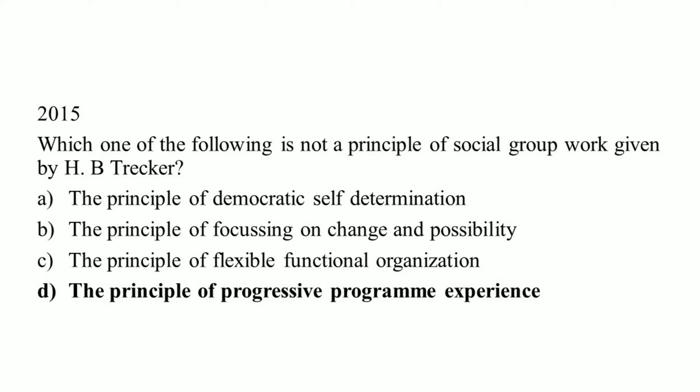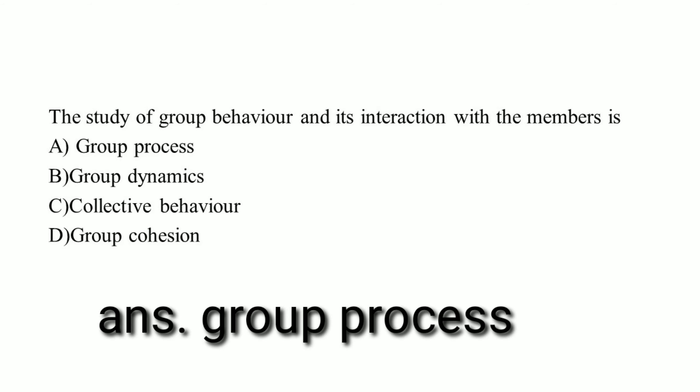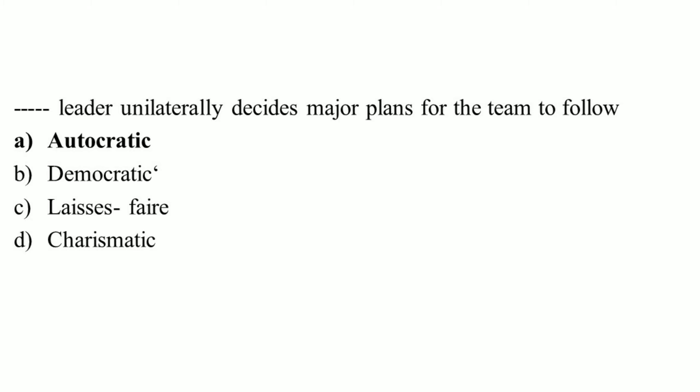From the 2015 UGC NET examination: which one of the following is not a principle of social group work given by H.B. Trecker? Right answer: option D, the principle of progressive program experience. Which one of the following stages of group development represents established roles, standards, and directions? Right answer: option B, storming. The study of group behavior and its interaction with the member is: right answer option A, group process. A leader who unilaterally decides major plans for the team to follow: right answer option A, autocratic.